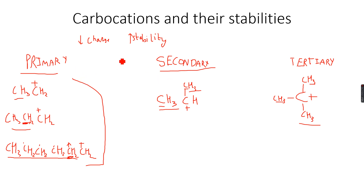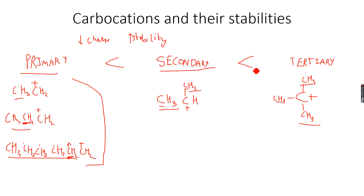Secondary carbocations are more stable than primary carbocations. When you look at tertiary carbocations, the carbocation carbon is attached to three carbon atoms directly, and all of them are moving electrons towards the carbocation. So the positive charge is lowered even further and stability increases even more. Tertiary carbocations are the most stable, followed by secondary, then primary — this is how stability increases from primary to secondary to tertiary.